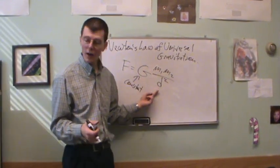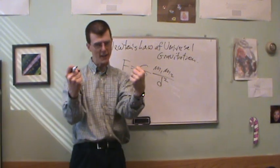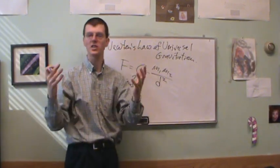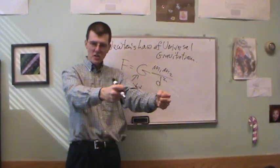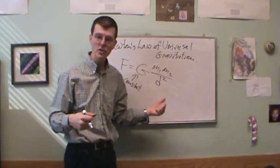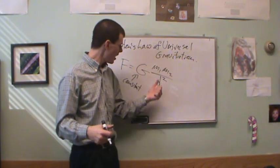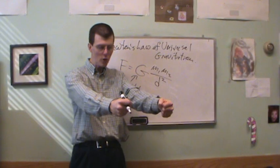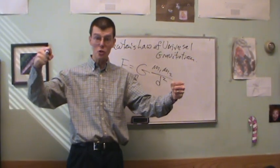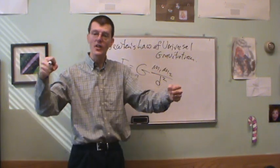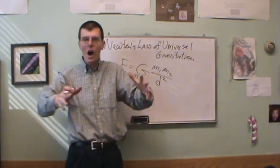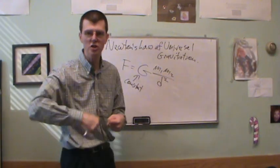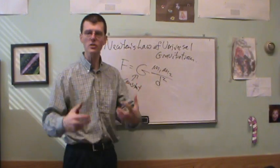The force of gravity also depends on the distance between objects squared. If you double the distance between two objects, the force of gravity is only one-fourth as strong — because two squared is four. If you triple the distance, gravity is only one-ninth as strong. Gravity drops off substantially with distance. We take the product of the masses, divide by the distance squared, throw in a constant, and out pops the force of gravity.